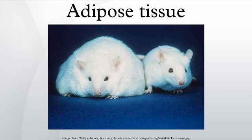The thrifty gene hypothesis states that in some populations the body would be more efficient at retaining fat in times of plenty, thereby endowing greater resistance to starvation in times of food scarcity. This hypothesis, originally advanced in the context of glucose metabolism and insulin resistance, has been discredited by physical anthropologists, physiologists, and the original proponent of the idea himself with respect to that context, although according to its developer it remains as viable as when it was first advanced in other contexts.